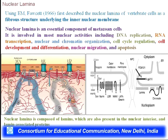Nuclear lamina is an essential component of a metazoan cell. Initially, nuclear lamina was thought to mainly provide structural rigidity to the nuclear membranes, but gradually it was found to be involved in most nuclear activities including DNA replication, RNA transcription, nuclear and chromatin organization, cell cycle regulation, cell development and differentiation, nuclear migration, and apoptosis. So nuclear lamina has a variety of roles beyond the structural rigidity it provides to the double-membrane nuclear envelope.